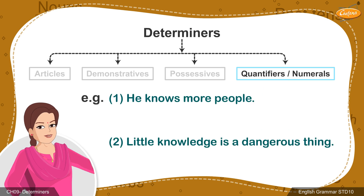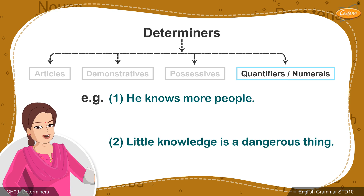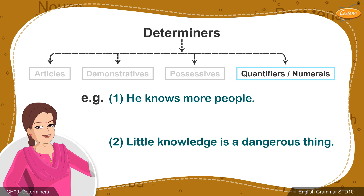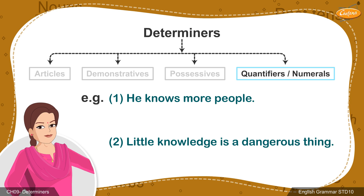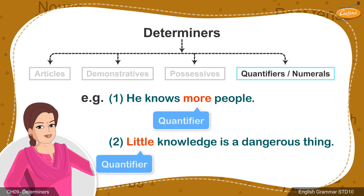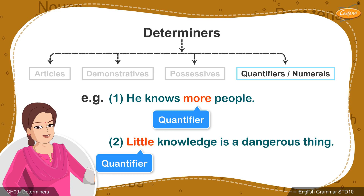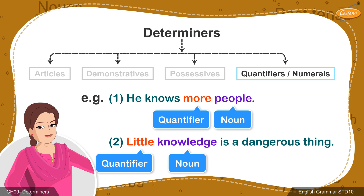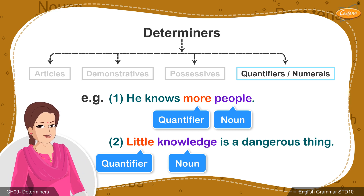In both the examples given, 'he knows more people' and 'little knowledge is a dangerous thing,' 'more' and 'little' are quantifiers which modify 'people' and 'knowledge' respectively. Students, now you have learned all the types of determiners and can attempt the exercises on your own.